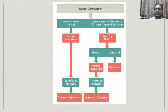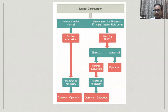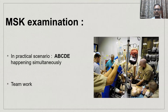In summary for hemodynamic stabilization in the primary survey: if there is no circulatory or hemodynamic issue, proceed with the primary survey. If there is a hemodynamic issue, start crystalloid resuscitation, then move to blood resuscitation. After addressing circulatory issues, we move to musculoskeletal examination.